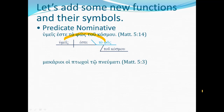Blessed are the poor in spirit. Notice there's no linking verb expressed at all here — that verb is elliptical. By instinct we are inclined to take makarioi as the subject because it's the first word in the sentence. But makarioi is an adjective, not a noun, and it lacks the article. Whereas hoi ptokoi — ptokoi with the article is functioning as a substantive, the poor ones, the poor people. So ptokoi is the subject and makarioi is the predicate nominative.